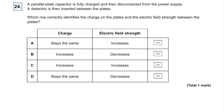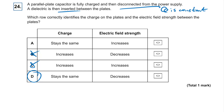Question twenty-four: a parallel plate capacitor is fully charged and disconnected from the power supply. If disconnected, Q is constant; if still connected, V would be constant. A dielectric is inserted between the plates — charge stays the same, so we know it's A or D. The electric field strength actually decreases when polar molecules are inserted between the plates, which increases the capacitance. The answer is A. Hope you found that helpful — please leave a like, visit physicsandmathstutor.com, and thanks for watching.